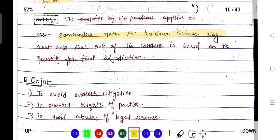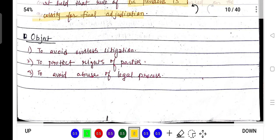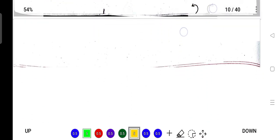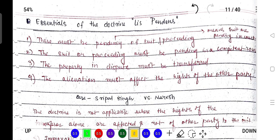An important case law is Samarendra Nath versus Krishna Kumar Naloya, where lis pendens is based on the necessity of final adjudication. What is the object of the doctrine of lis pendens? To avoid endless litigation, to protect the rights of the parties, and to avoid abuse of legal process.